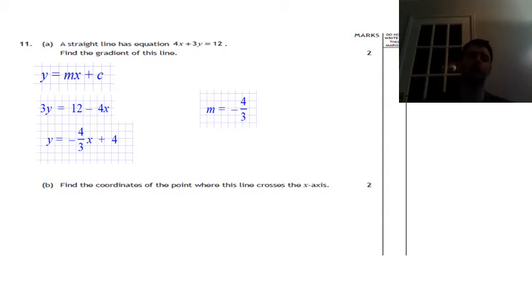Part B says find the coordinates of the point where the line crosses the x axis. So the key bit of information there is, do you know when something cuts the x axis that y equals 0? Now you can use either version of the equation. You could use this first one, the 4x plus 3y equals 12.